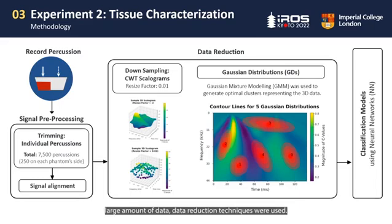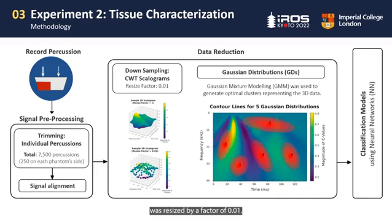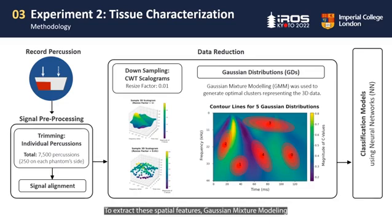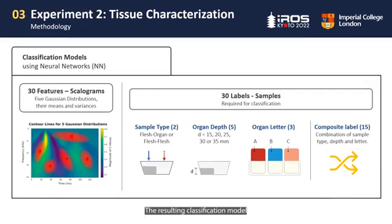Due to the large amount of data, data reduction techniques were used. First, the number of data points in the scalograms was resized by a factor of 0.01. Then, further reduction was achieved by generating optimal data clusters. To extract these spectral features, Gaussian mixture modeling was used, resulting in five key Gaussian distributions. With this, instead of running the neural networks on the entire dataset, we can tell them what specific regions to explore. The resulting classification model uses the Gaussian distributions and scalograms to predict the sample labels.